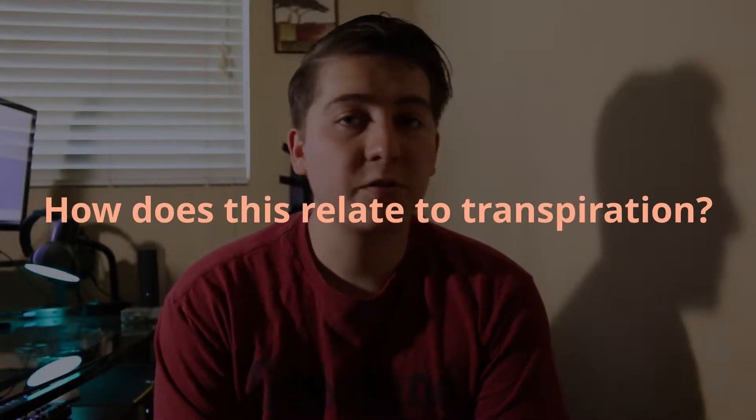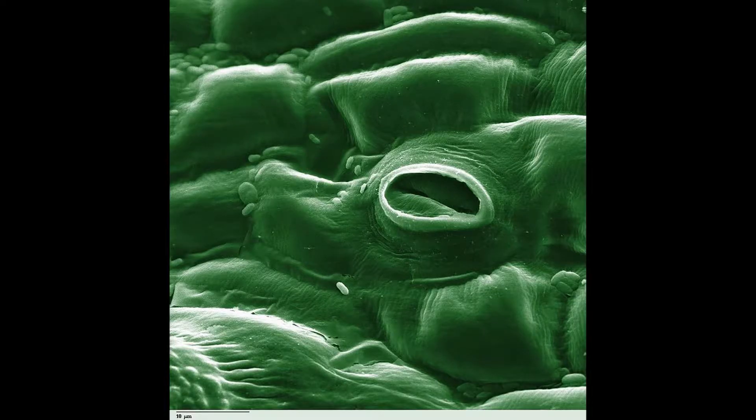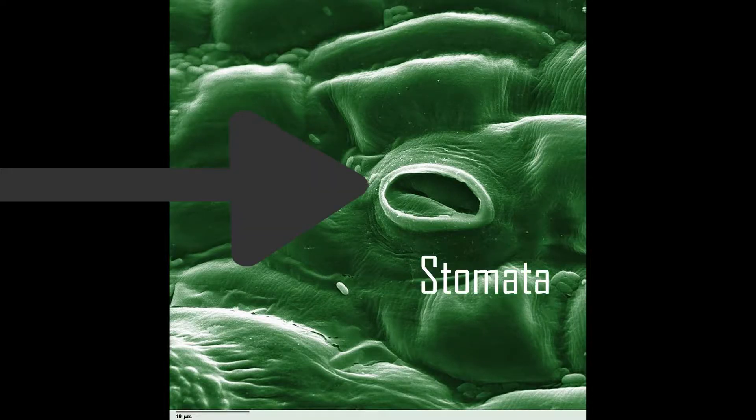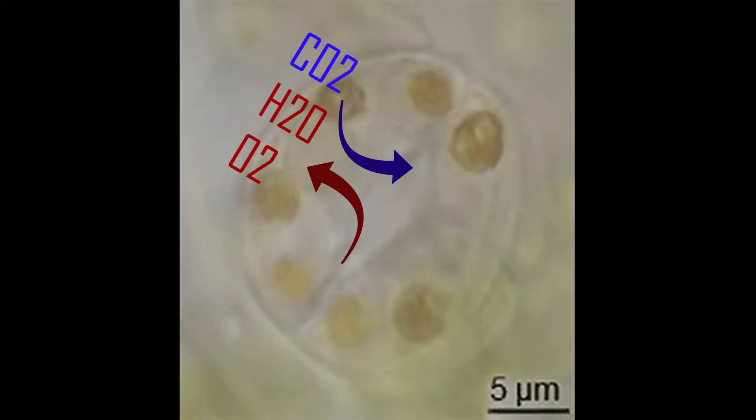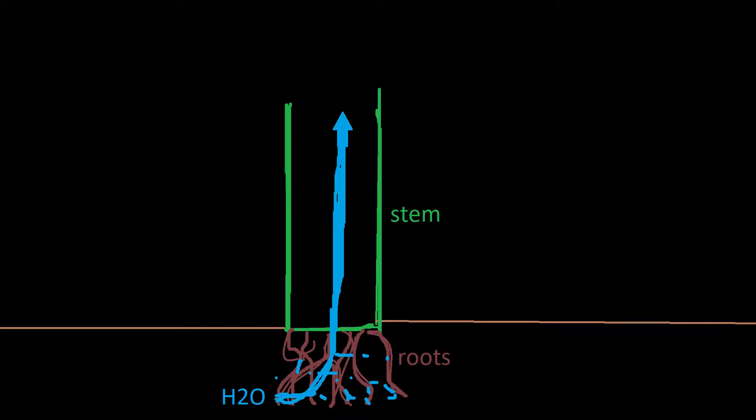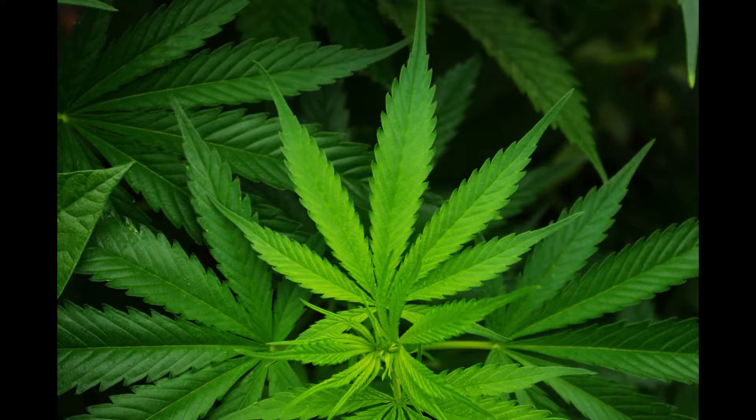What does this humidity mean in terms of the plant's necessities? If the humidity is at 65%, we know the room is at 65% capacity for relative humidity at that given temperature. We can use that knowledge to decipher how much our plant will be transpiring. There are little guard cells underneath the leaves called stomata, and what these cells do is help exchange gases with the environment.